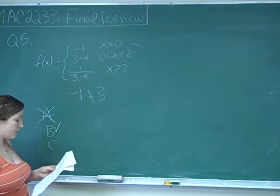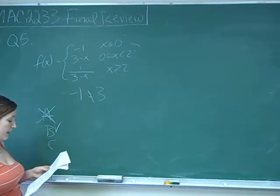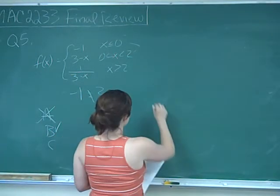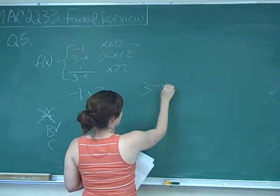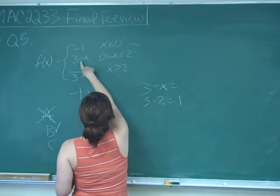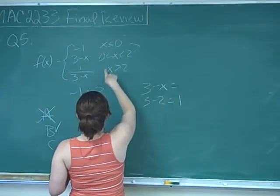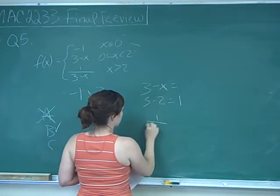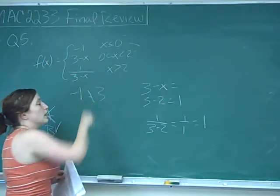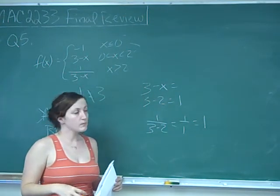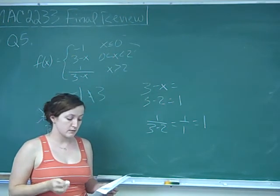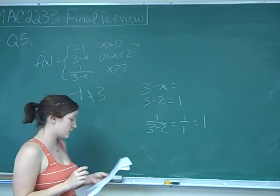Statement C says f can be made continuous at x equals 2 by defining f(2) equals 1. If we plug 2 into 3 minus x, we get 1. If 2 was included in the second piece, we would get 1. If 2 was included in the third piece, we get 1 over 3 minus 2, which is 1 over 1, which equals 1. So these two equations approach the same value as x approaches 2. We can make this continuous by defining f(2) equals 1, so C is also true.